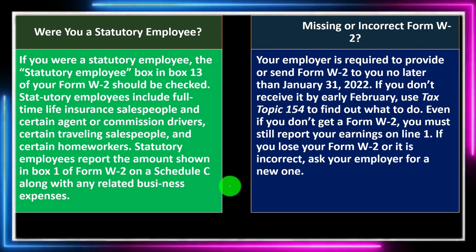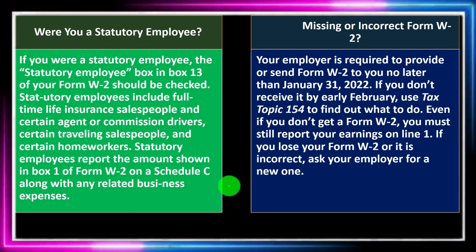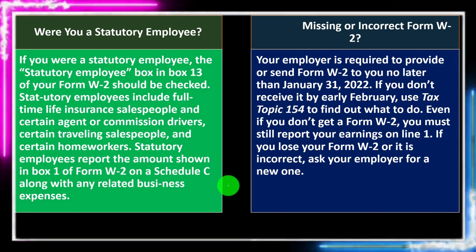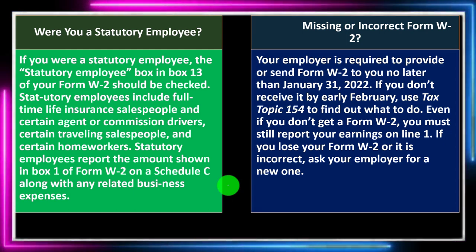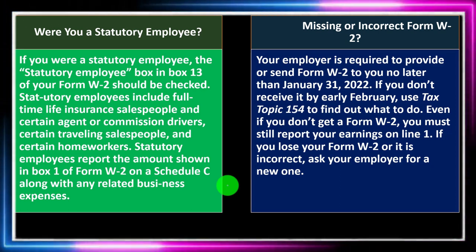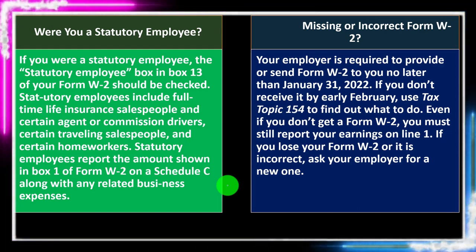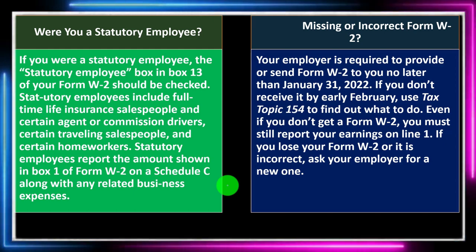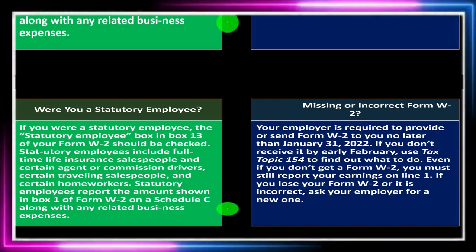If a W-2 is missing or incorrect: your employer is required to provide Form W-2 no later than January 31, 2022. If you don't receive it by early February, use Tax Topic 154 to find out what to do. Even if you don't get a W-2, you must still report your earnings on line one. If you lose it or it's incorrect, ask your employer for a new one. If they don't fix it and send the corrected version to the IRS, it won't match what the IRS has on file — which could delay your refund.